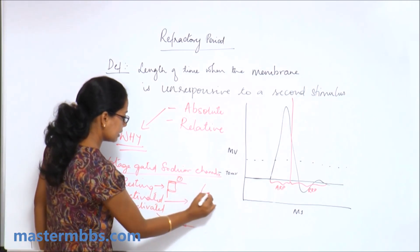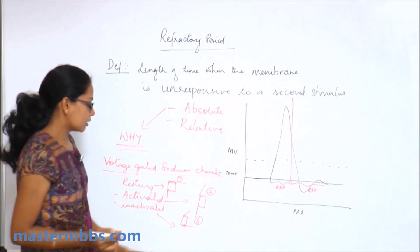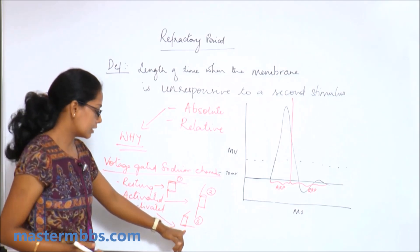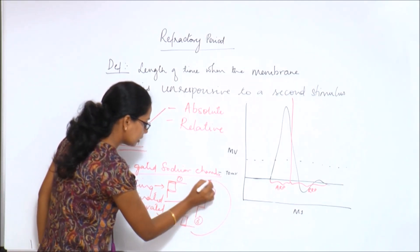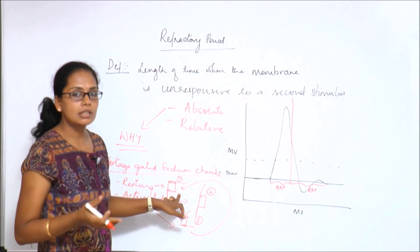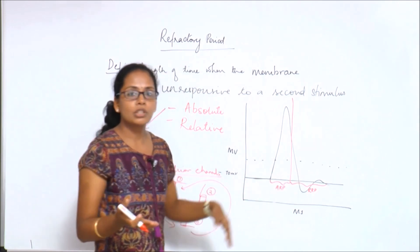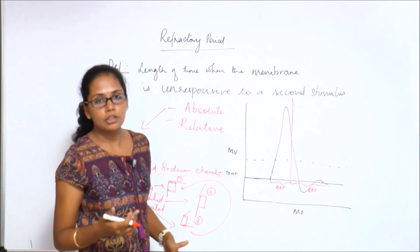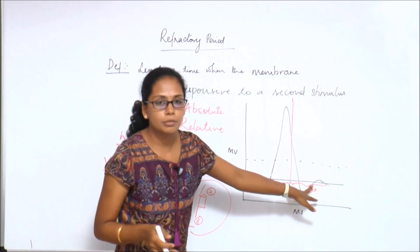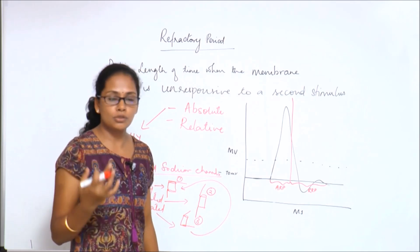These are the three states: resting, activated, and inactivated. Up to the first one-third of repolarization, the channels are in the inactivated state, after which they go back to the resting state. When the channels return to the resting state, a stronger stimulus can easily open them again and elicit another action potential. That is why in the relative refractory period the nerve responds to a second stimulus, but that stimulus must be strong.